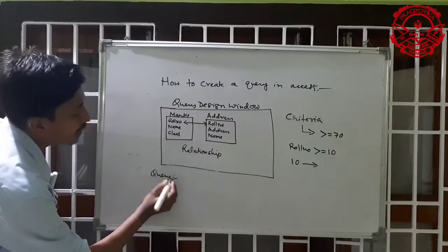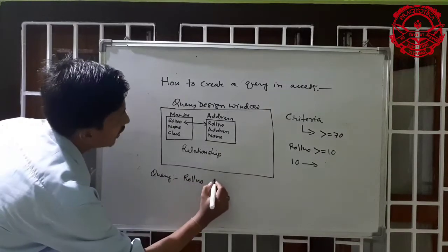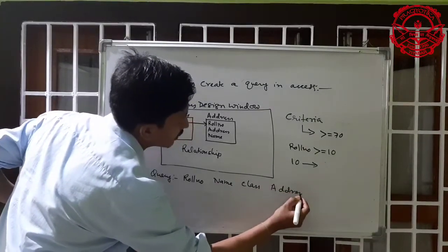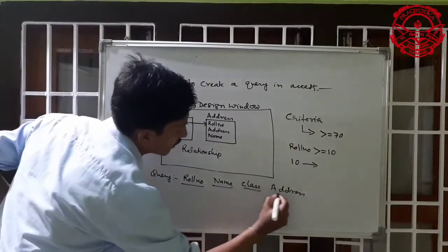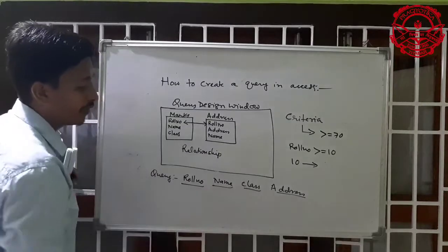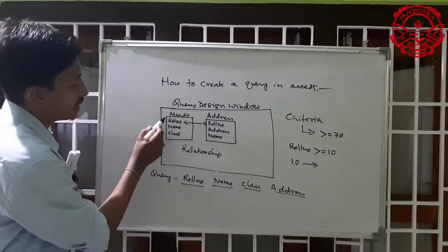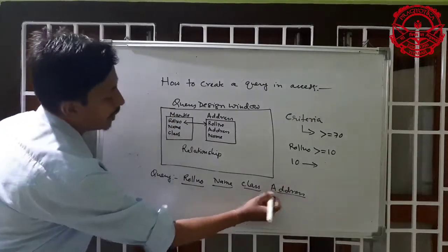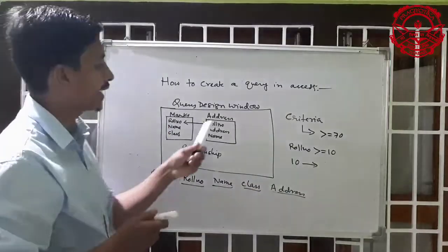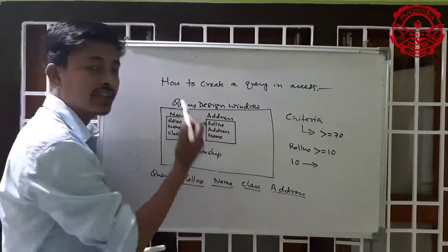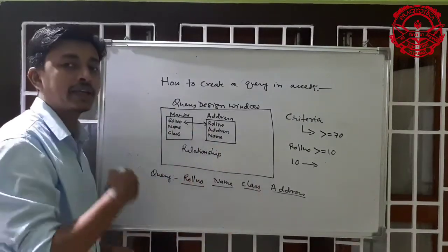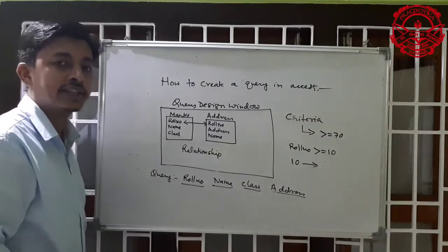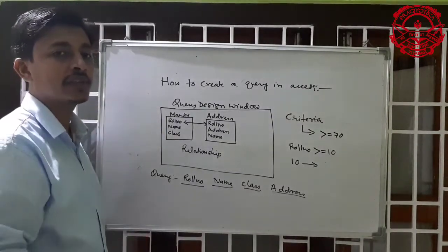In the query I want roll numbers, names, class, and also address. The first three fields — roll number, name, class — already exist in the marks table, but the address field is in the address table. That's why we have to collect the address from the address table.